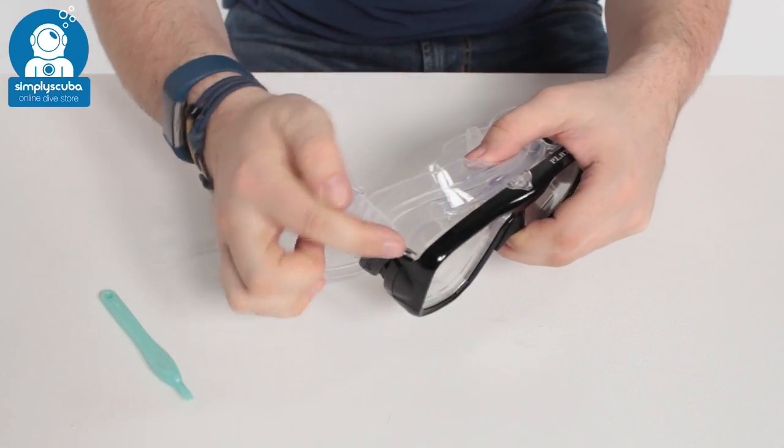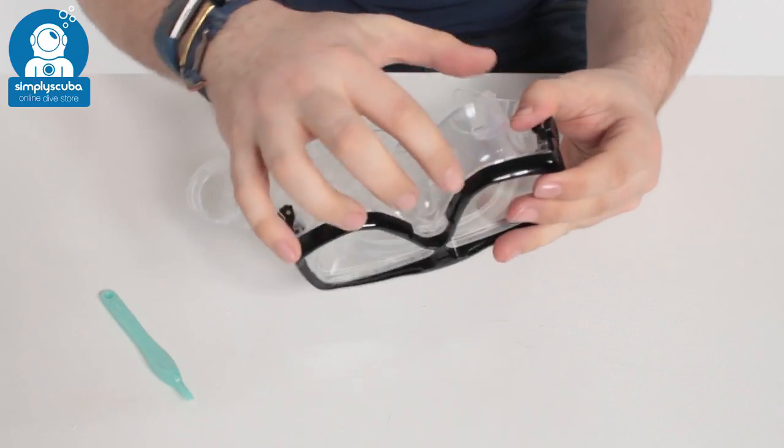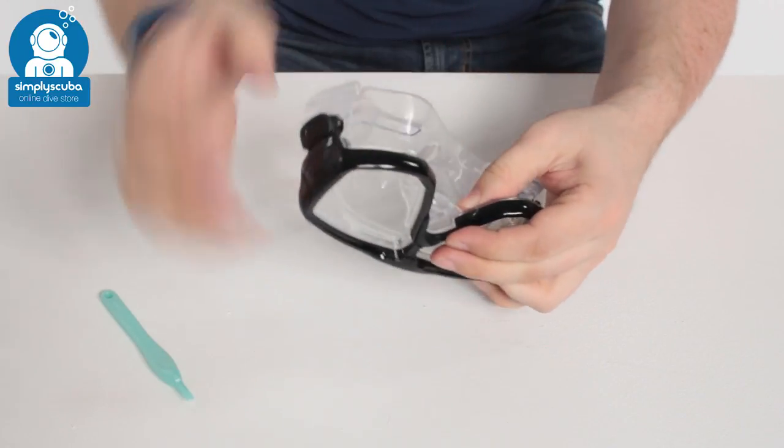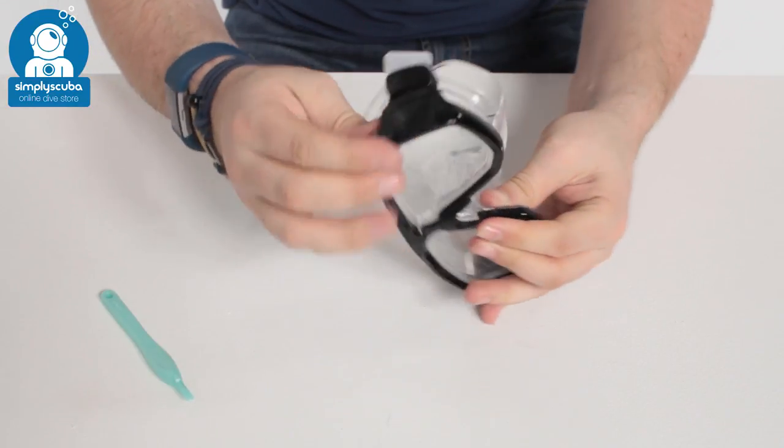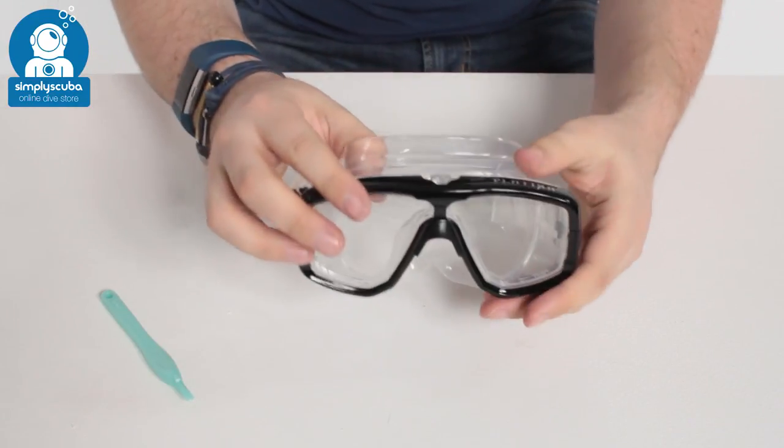Then when it's back, just take a look all the way around this seam, make sure it's nice and flat. Like here, you just want a little bit of extra pressure just to clip it back into position.